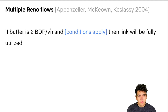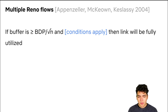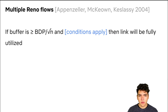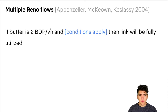What I'd like to spend the rest of the talk on is our results for multiple flows. As a reminder, the state of the art is the square root of n rule for multiple TCP Reno flows from the paper by Appenzeller, McKeown, and Kessley in 2004.